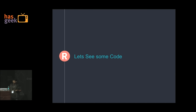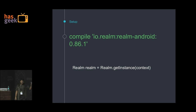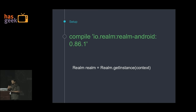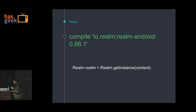Let us see some code. Realm is very simple to add — just a Gradle dependency. It is pretty stable now for Android at version 0.86. Just add the compile statement, and the way you get an instance of Realm is just say Realm.getInstance() anywhere in your app. Realm uses reference counting, so you can call getInstance() anytime from anywhere. You can use it in your activities and call close() whenever your activity lifecycle is closing, and it will take care of releasing the memory.